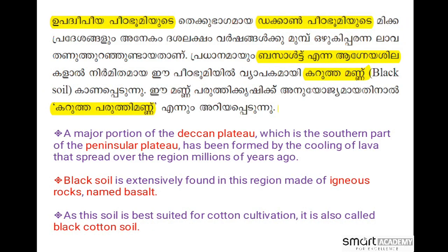The major portion of the Deccan Plateau, which is the southern part of the Peninsular Plateau, has been formed by the cooling of lava that spread over the region millions of years ago. Black soil is extensively found in this region, made of igneous rock named basalt. As this soil is best suited for cotton cultivation, it is also called black cotton soil.